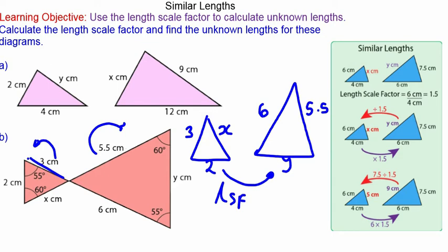So the length scale factor using the corresponding sides of 3 and 6 would be 6 centimeters divided by 3 centimeters, which is 2.